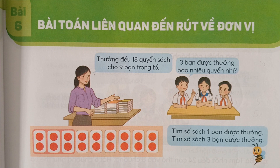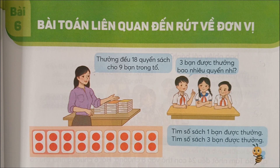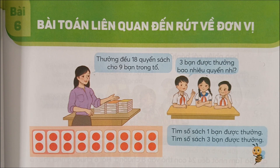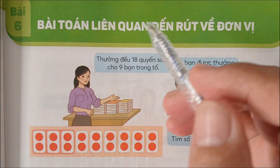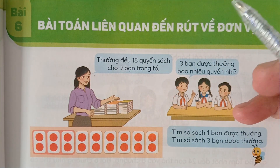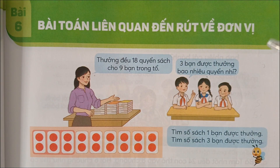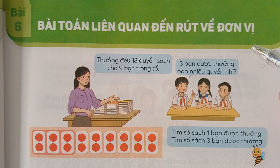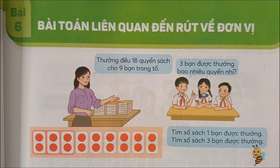Xin chào tất cả các con học sinh lớp 4 nha. Các con học sinh lớp 4 thân mến, hôm nay chúng ta sẽ học bài số 6: Bài toán liên quan đến rút về đơn vị, trong sách giáo khoa Toán lớp 4 Trân trời sáng tạo nha các con.